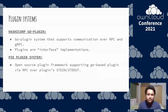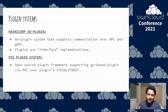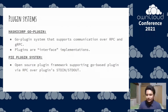The second plugin system we considered was the PI plugin system. It's really similar to the HashiCorp plugin system, except it supports only RPC rather than gRPC, and instead of communicating over a local network, it communicates via standard input and standard output.